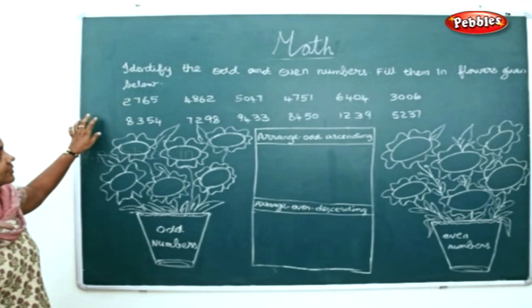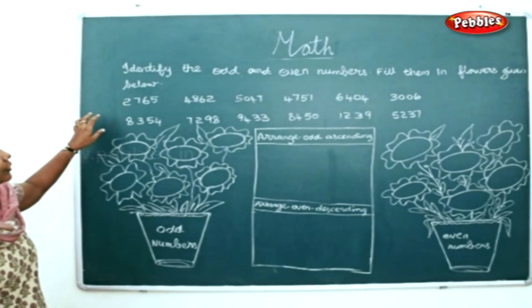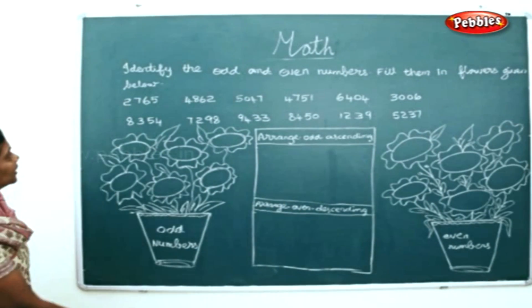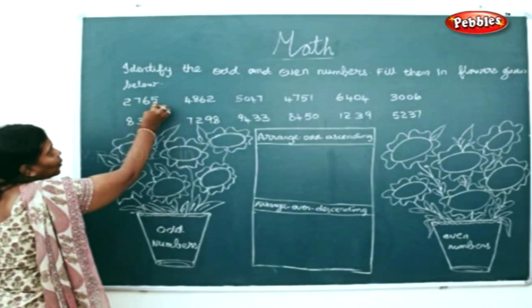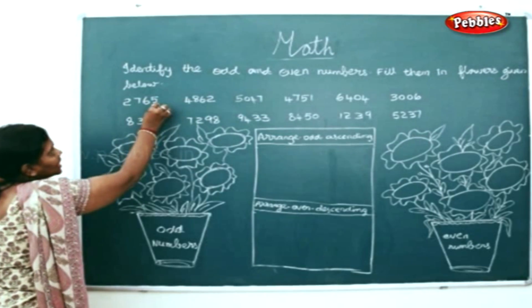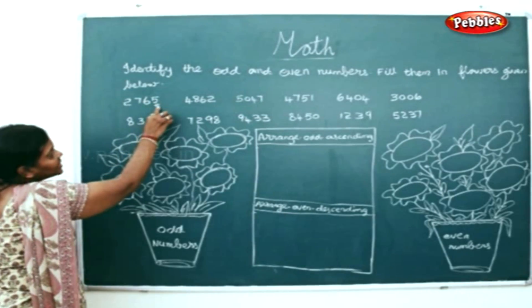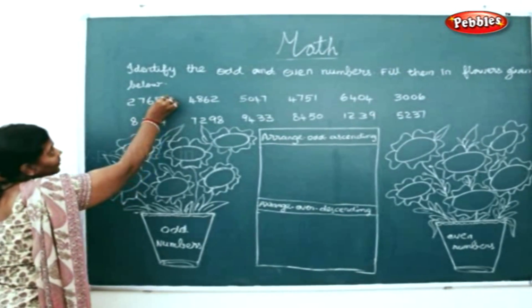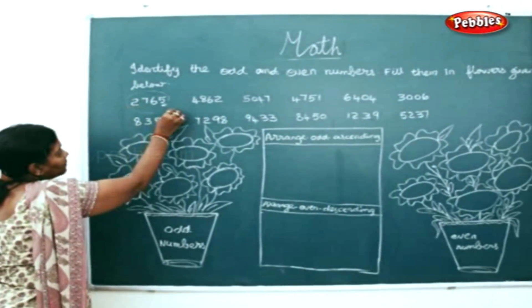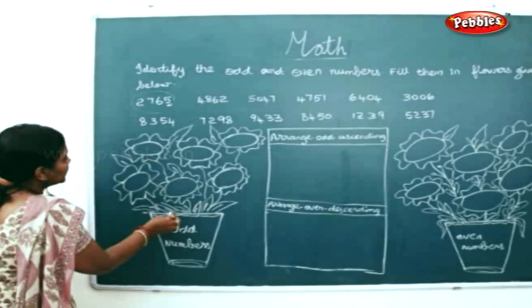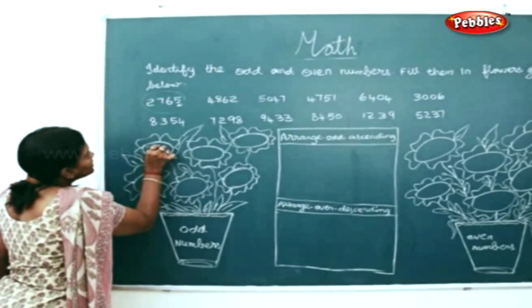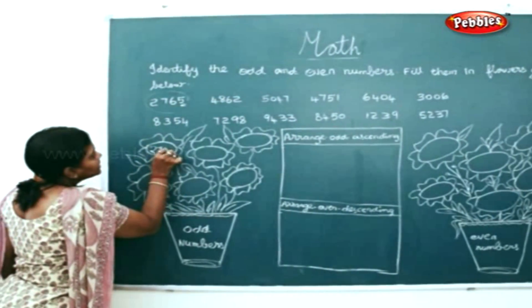Arrange the odd and even numbers and fill them in the flowers given below. Now I'm going to check the ones place. Five is the odd number, so I'll write this whole number 2765 in the odd numbers place.